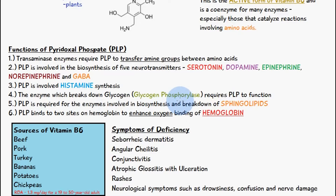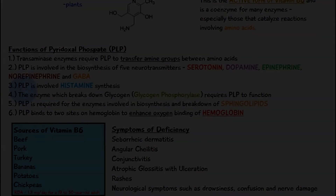Pyridoxal phosphate is also required for the enzymes which synthesize and break down sphingolipids, which is a type of lipid or fat. Pyridoxal phosphate also binds onto two sites on hemoglobin to enhance its oxygen binding. Now these are just a few of the functions — there are a lot more — but I've just focused on these six ones here.